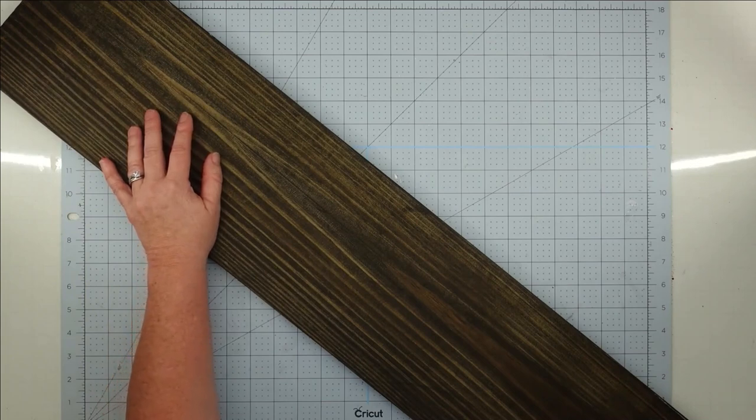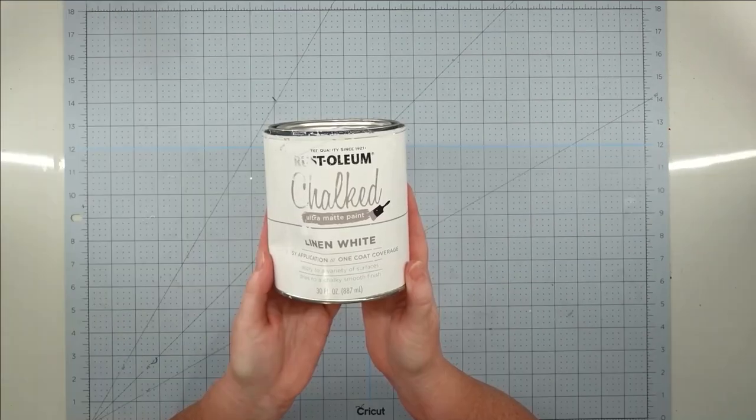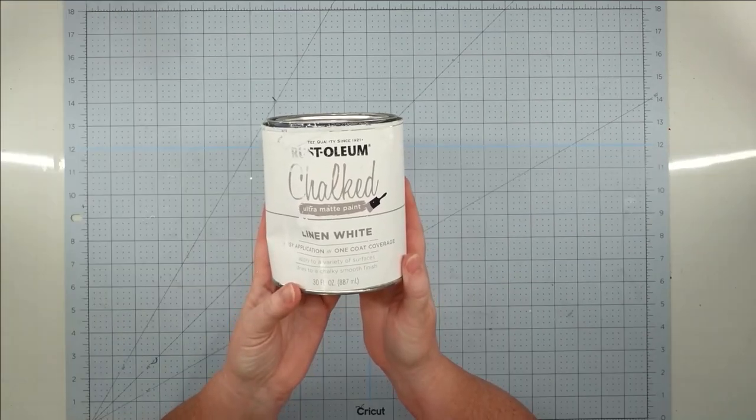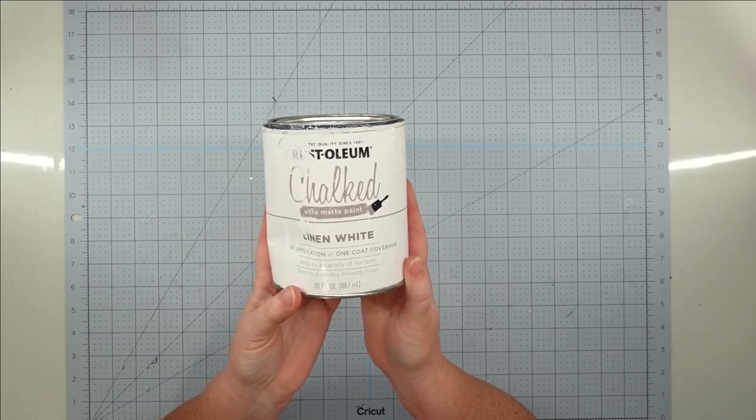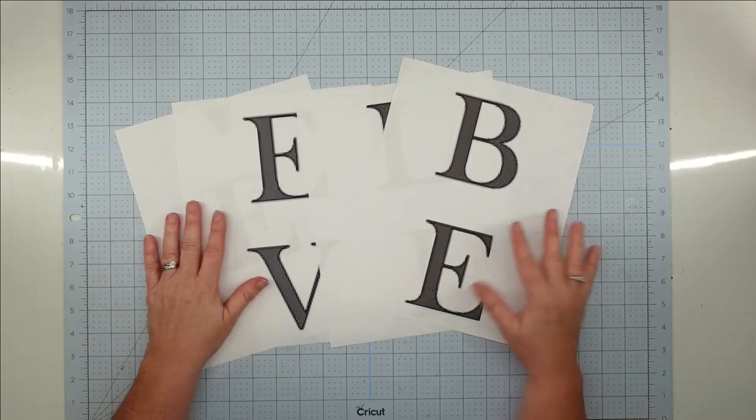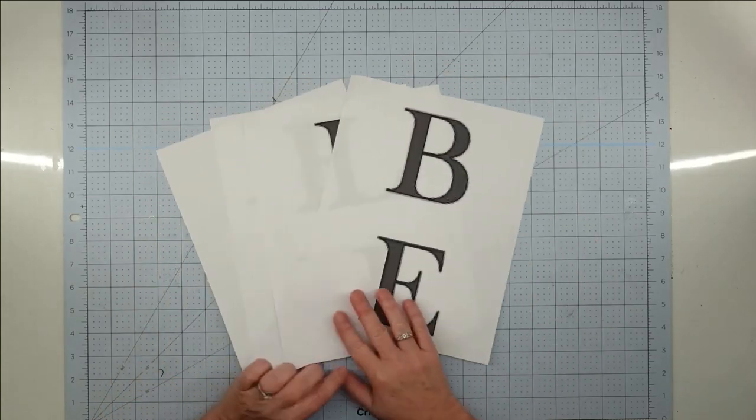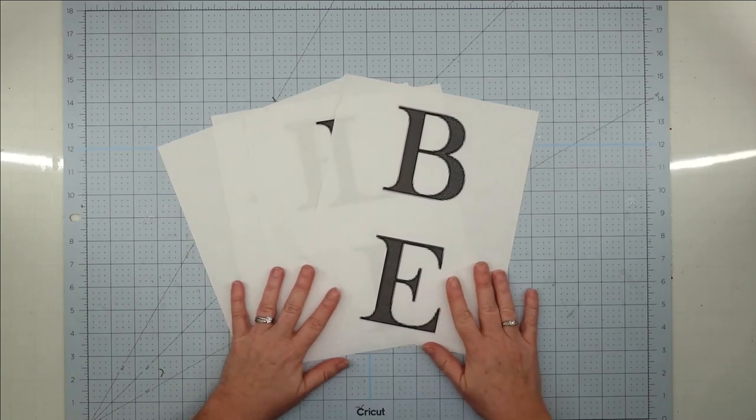This piece is 39 inches long and it is already stained because I was using it as part of my shelving for my crafts display. Some Rust-Oleum chalk paint in linen white. Some letters that I printed off from my computer that spell believe. Now these were blown up to fit my 39 inch sign and I will put a link down below if you would like to have a copy of this.